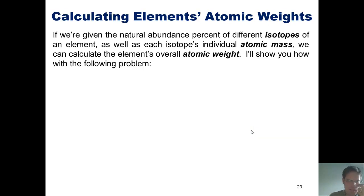So if we're given the natural abundance percentage of different isotopes of an element, as well as each isotope's individual atomic mass, we can calculate the element's overall atomic weight. I'll show you how with the following problem.